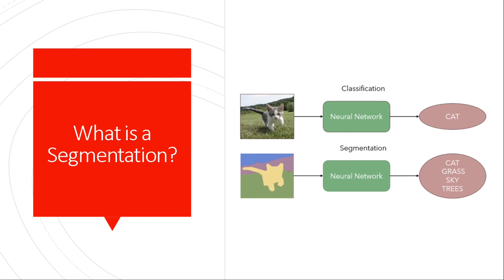On the other hand, there are tasks when we need to be even more precise when processing images. Imagine that you have an image of yourself and you want to change the background of your photo. In this case you need very precise edge contour detection that will segment and label all pixels that belong to your body. The output image should label all pixels belonging to the person as a unique label class.